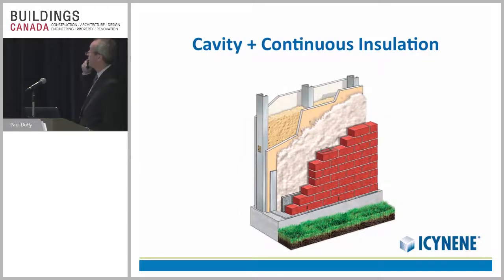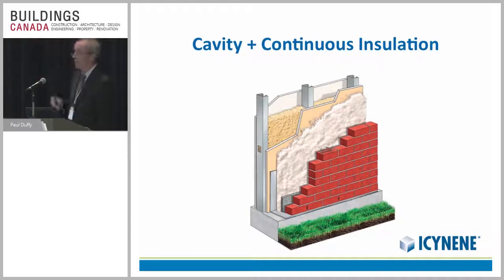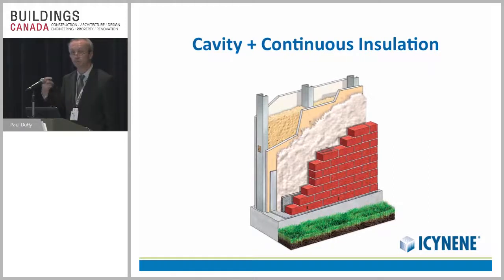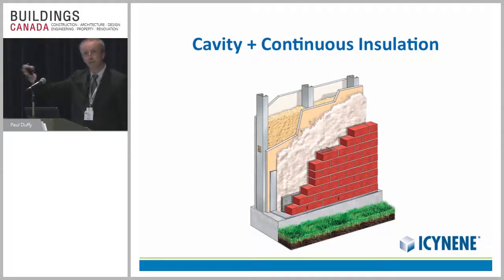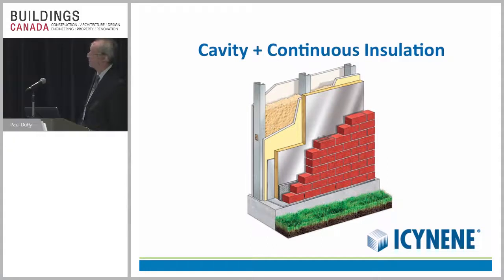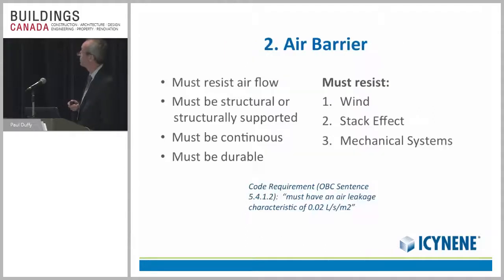Continuous insulation can be done in combination with cavity insulation as well, getting you to much higher levels of performance. It's fundamentally important to the performance of steel stud walls to have continuous insulation over top of the assembly. The code actually assesses a penalty of about 30% in terms of heat loss through structural elements because of the fin effect with metal studs and metal framing. You can see a variety of approaches and product combinations that achieve fundamentally similar types of performance improvements.